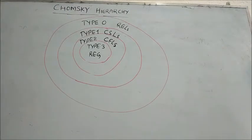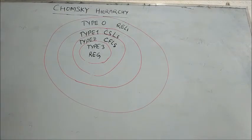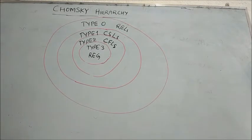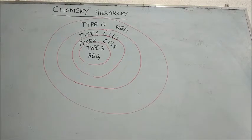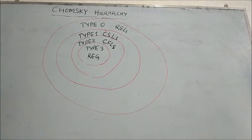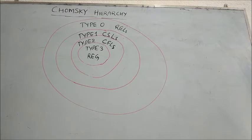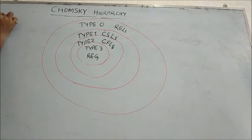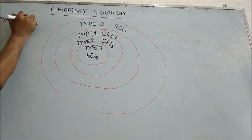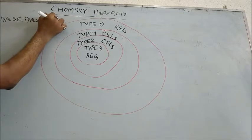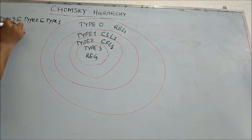Chomsky Hierarchy presents four concentric circles. The inner core is Type 3, which is REG — Regular Language. The next circle is Type 2, which is CFL — Context-Free Language. After that is Type 1, which is CSL — Context-Sensitive Language. And the outermost is Type 0, which is REL — Recursive Enumerable Language. Chomsky states that Type 3 is a subset of Type 2, Type 2 is a subset of Type 1, and Type 1 is a subset of Type 0.